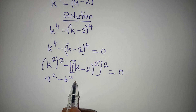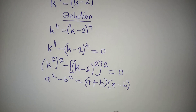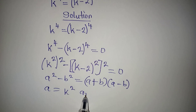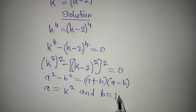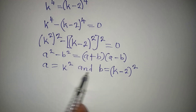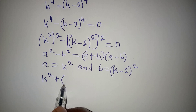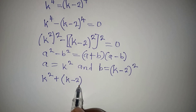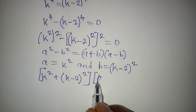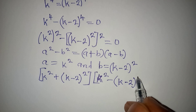If you have a squared minus b squared, we take the difference of two squares as (a + b)(a − b). Using the same rule, our a is k squared and our b is (k minus 2) squared. So a plus b becomes k squared plus (k minus 2) squared in the first bracket.